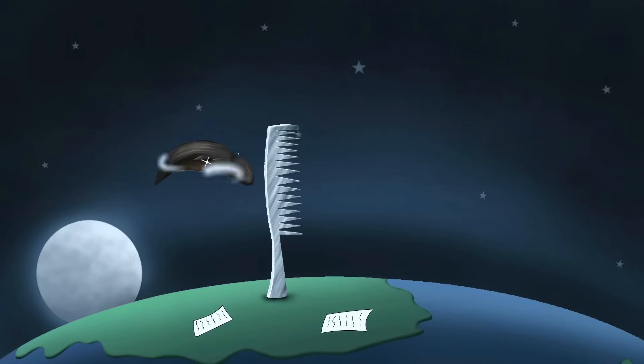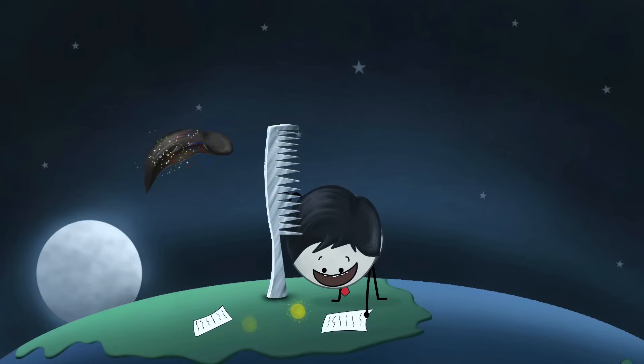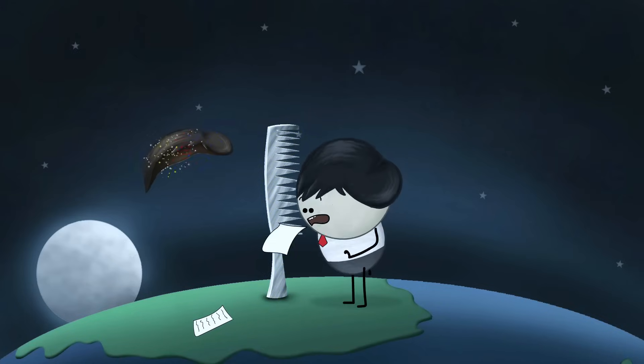However, metal is a good conductor of electricity. It does not let the charges build in it. It allows the electric charges to flow through it onto the earth. Thus, not allowing the metallic comb to get electrically charged. As a result, the metallic comb does not attract the pieces of paper.